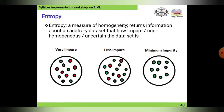Entropy is a measure of homogeneity — it gives information about how impure, non-homogeneous, or uncertain an arbitrary dataset is. Consider a dataset represented by circles containing colored dots of two colors: red and green. In this example, every green dot is separated by a red dot, or every red dot is separated by a green dot, meaning there is no relationship between dots of the same color.